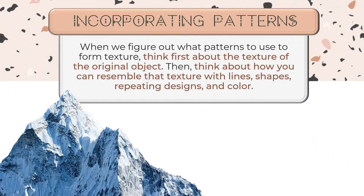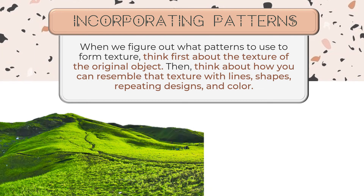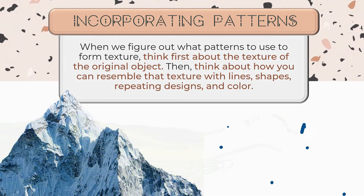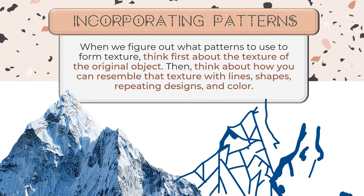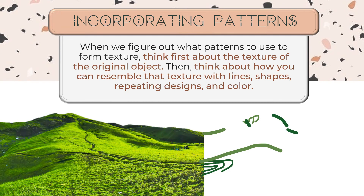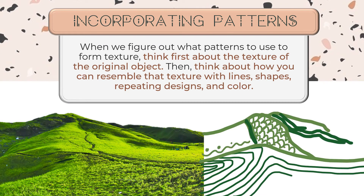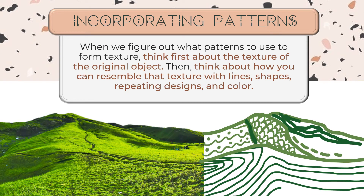Let's take another example. This time let's try a landscape. Mountains can be rough, but they can also look grassy. For a rough texture, we can create different styles of lines on the mountain like this. For a grassy texture, we can add softer, curvier lines and dots. See the difference between the two mountains?